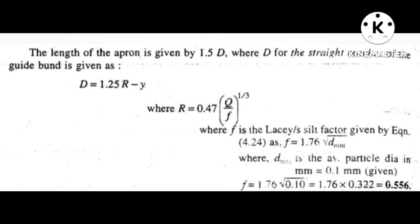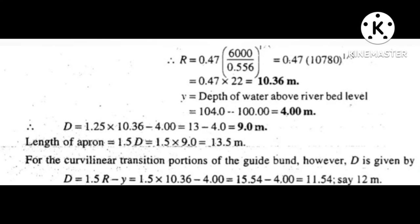The length of the apron is given by 1.5 D. For the straight portion of guideband, D is equal to 1.25R minus Y, where R is equal to 0.47 Q divided by F to the power 1/3, and F is the Lacey silt factor equal to 0.556. Therefore R is equal to 10.36 meters. Y is equal to depth of water above bed level, equal to 104 minus 100 equal to 4 meters. Therefore D is equal to 1.25 into 10.36 minus 4, equal to 9 meters. The length of apron is equal to 1.5 D, equal to 13.5 meters.